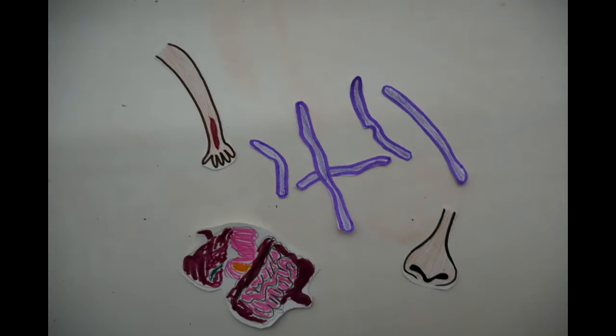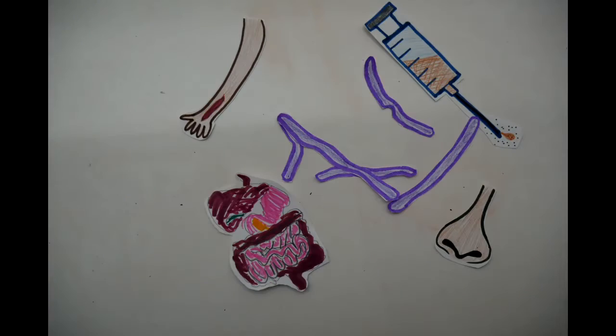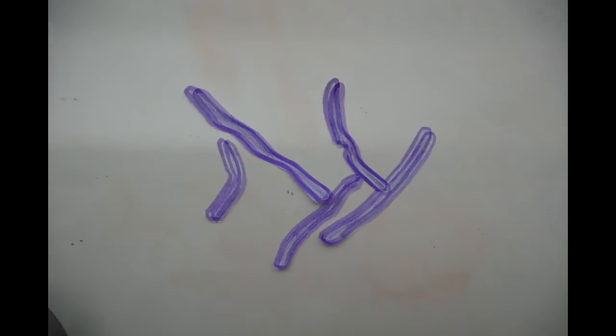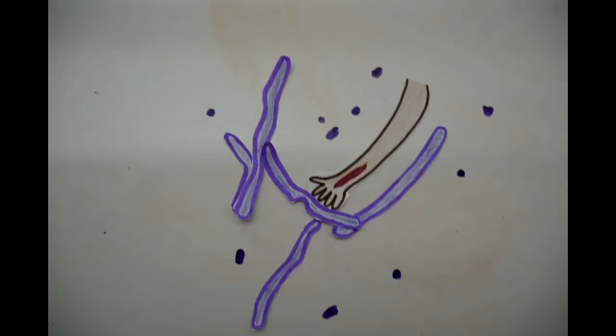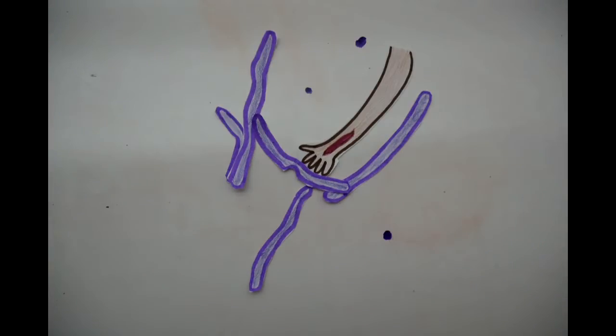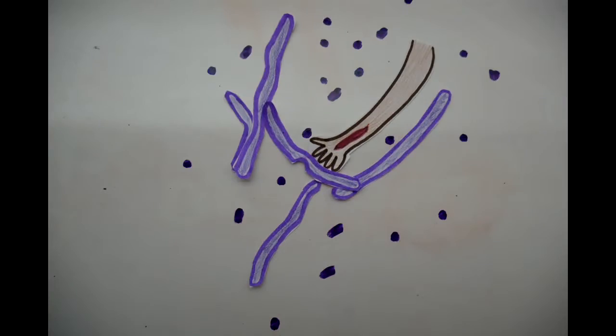Anthrax presents itself in four forms: cutaneous, gastrointestinal, inhalation, and injection infection. The most common cause of anthrax is cutaneous anthrax. This occurs when spores enter the body through cuts or abrasions of the skin. The next most common is called inhalation anthrax.